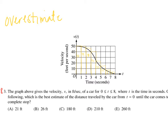So the question was: the graph above gives the velocity in feet per second of a car for 0 to 8 seconds — which is the best estimate for distance traveled? If we integrate the velocity we will get distance, but we don't have a function for velocity, so we're going to have to try a Riemann sum.